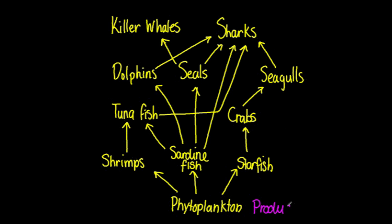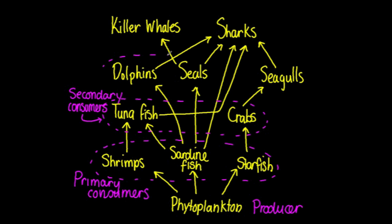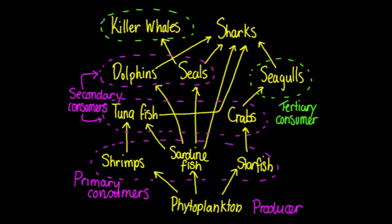Building on our prior knowledge, we can also do this kind of identification in a food web. Here the phytoplankton are the producers, the primary consumers have just been circled, followed by the secondary consumers — you can identify them by going through the food chain as the second organisms to eat. The third organisms that eat are the tertiary consumers — these are the seagulls and the killer whales.